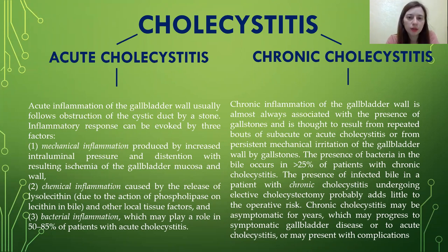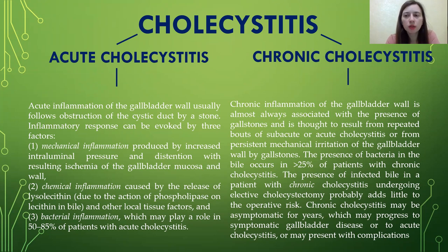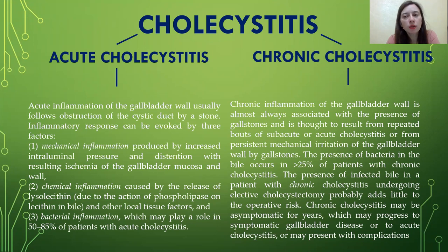Acute cholecystitis: inflammation of the gallbladder wall usually follows obstruction of the cystic duct by a stone. The inflammatory response can be evoked by three factors. First, mechanical inflammation produced by increased intraluminal pressure and distension with resulting ischemia of the gallbladder wall. Second, chemical inflammation caused by the release of lysolecithin and other local tissue factors. Third, bacterial inflammation, which may play a role in 50–85% of patients with acute cholecystitis.